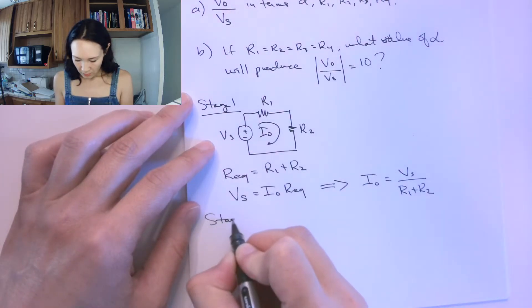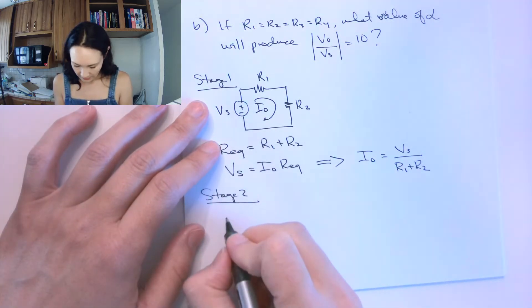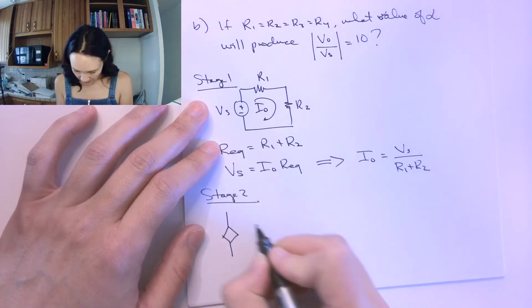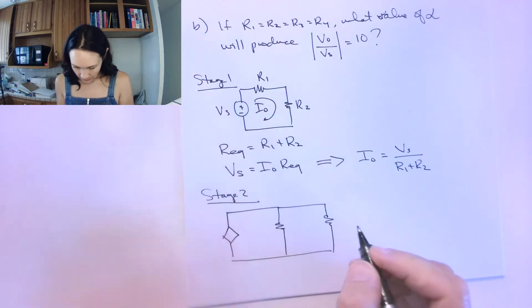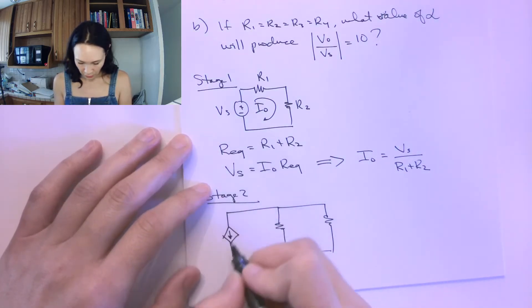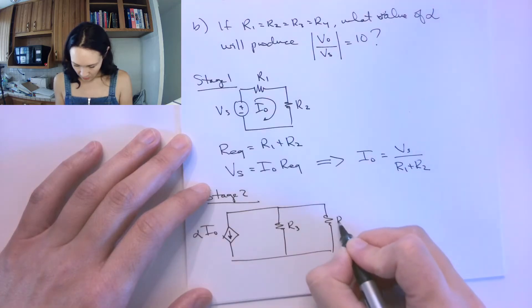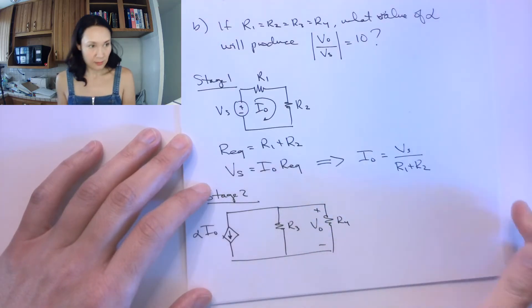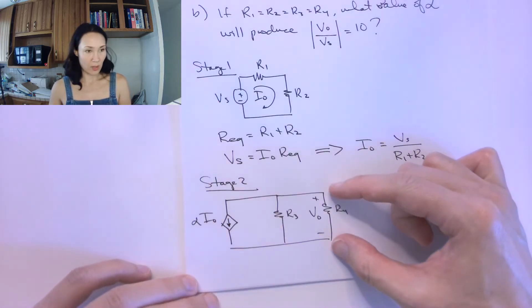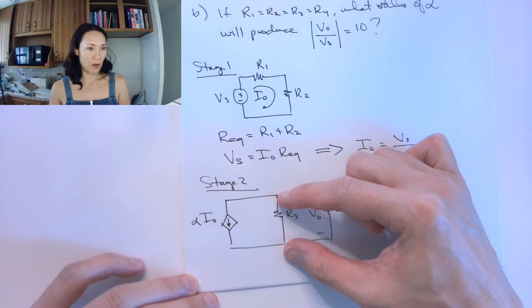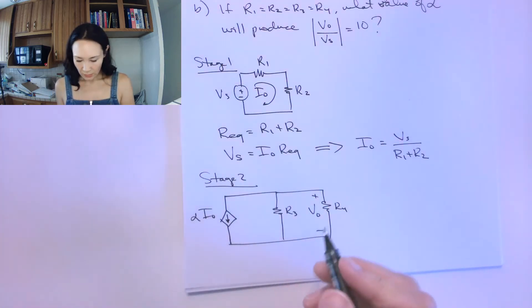In stage 2, we have this parallel circuit here. We have a dependent current source in parallel with these two resistors. The current goes in this direction: alpha times I0, and we have R3, and we have R4, and our voltage drop here is V0. Since this is a parallel circuit, we know the voltage drop across R4 is the voltage drop across R3, is the voltage being supplied by this power source.